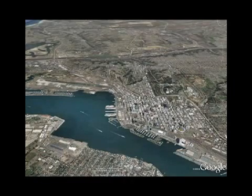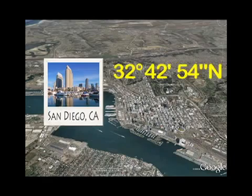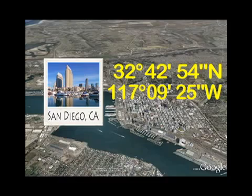Using latitude and longitude, the precise location of San Diego can be written as 32 degrees, 42 minutes, 54 seconds north latitude; 117 degrees, 9 minutes, 25 seconds west longitude.